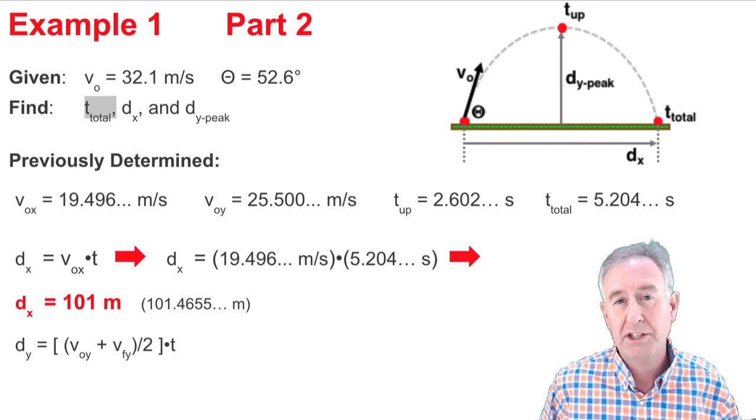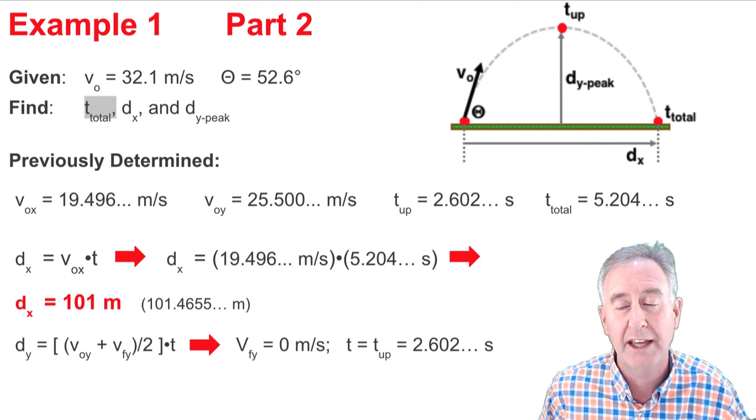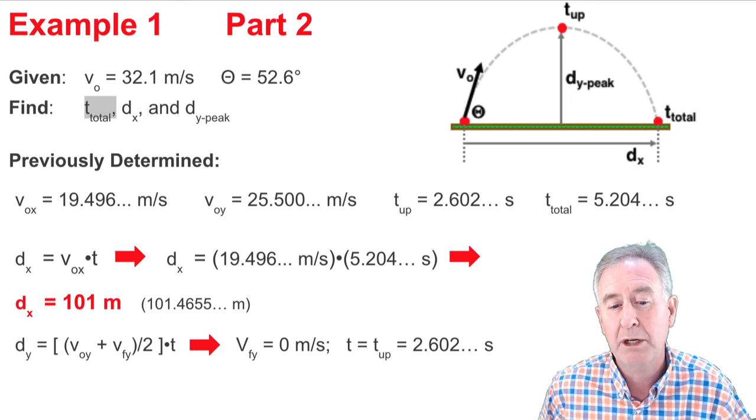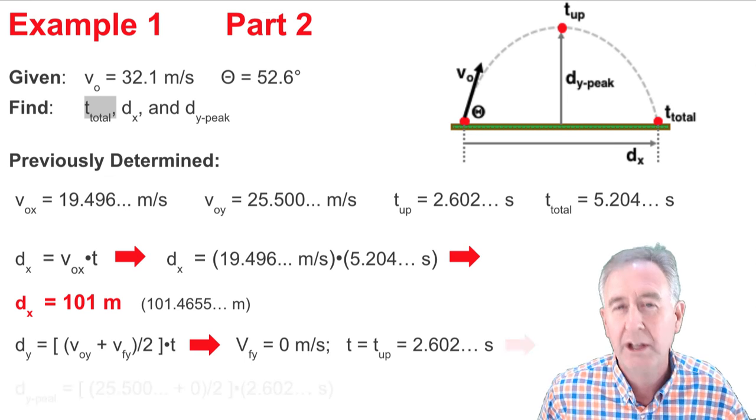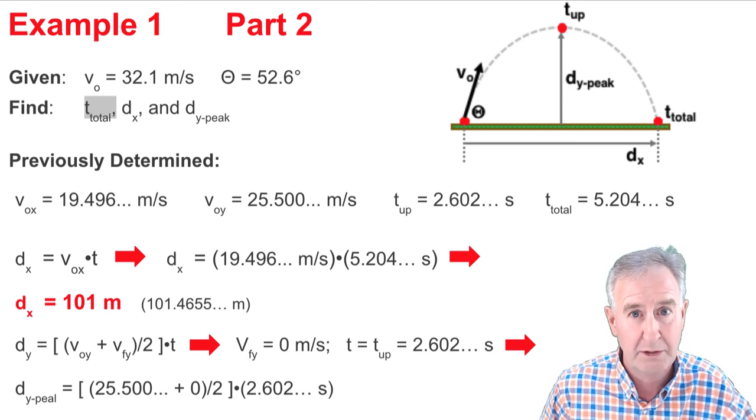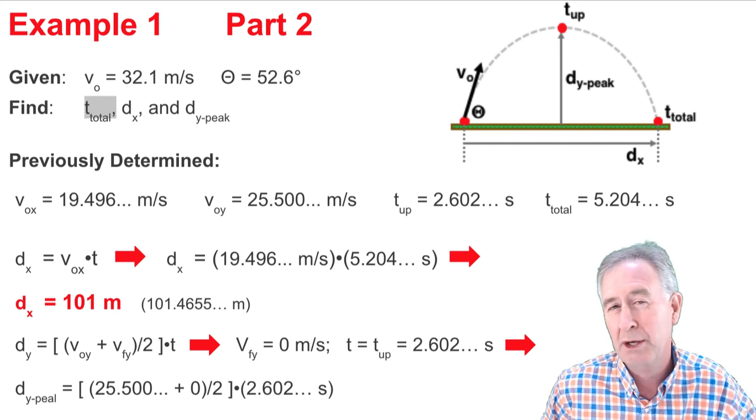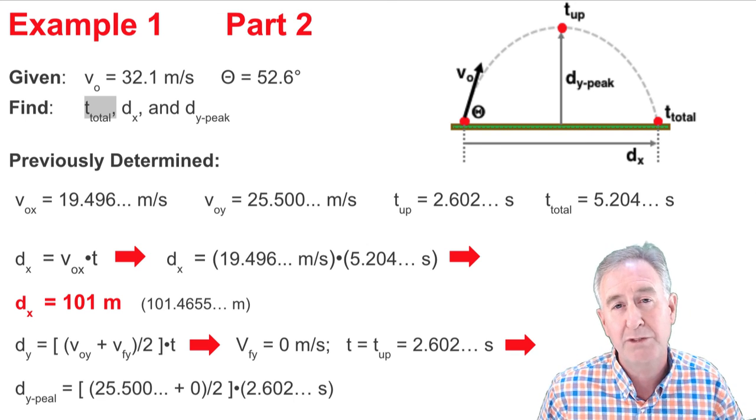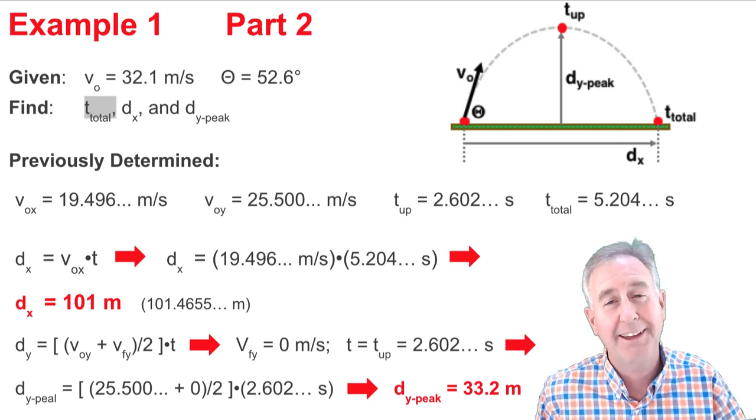Here's why I love that one. Because I happen to know that when the time is time up, the VY value is 0 meters per second. So I'm going to take those two numbers, the 2.602 and the 0 meters per second, and I'm going to plug it into this equation here, along with the 25.500 for the VOY. And the equation turns to this. DY at the peak is, inside of parentheses, 25.500 plus 0. Now that means the plus 0 part cancels. And that's why I like this equation. So I'm really going 25.500 divided by 2, and then multiplying by the t up value of 2.602. Do that on your calculator. And when you're done, you get 32.2 meters as the height at the peak.